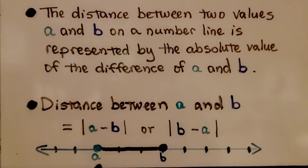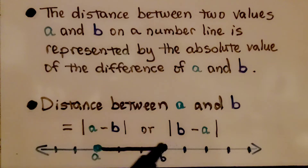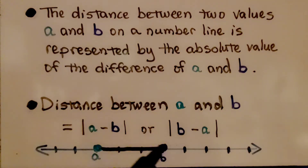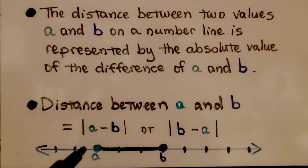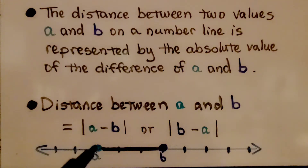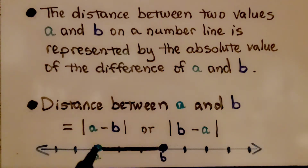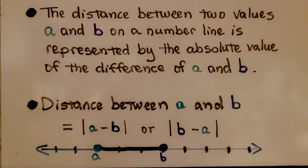If this is a and this is b, the distance between them is the absolute value of their difference. So even if these were in the negatives, it's still 1, 2, 3 units. We're just looking at the distance between them. The distance between them is three units.